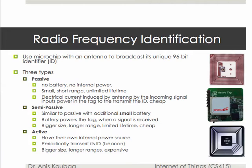Radio frequency identification is the wireless use of electromagnetic fields to transfer data for the purpose of automatically identifying and tracking tags attached to objects. We use these tags to attach them to objects that we would like to identify or track, and these tags contain an identifier used to uniquely identify a particular object.